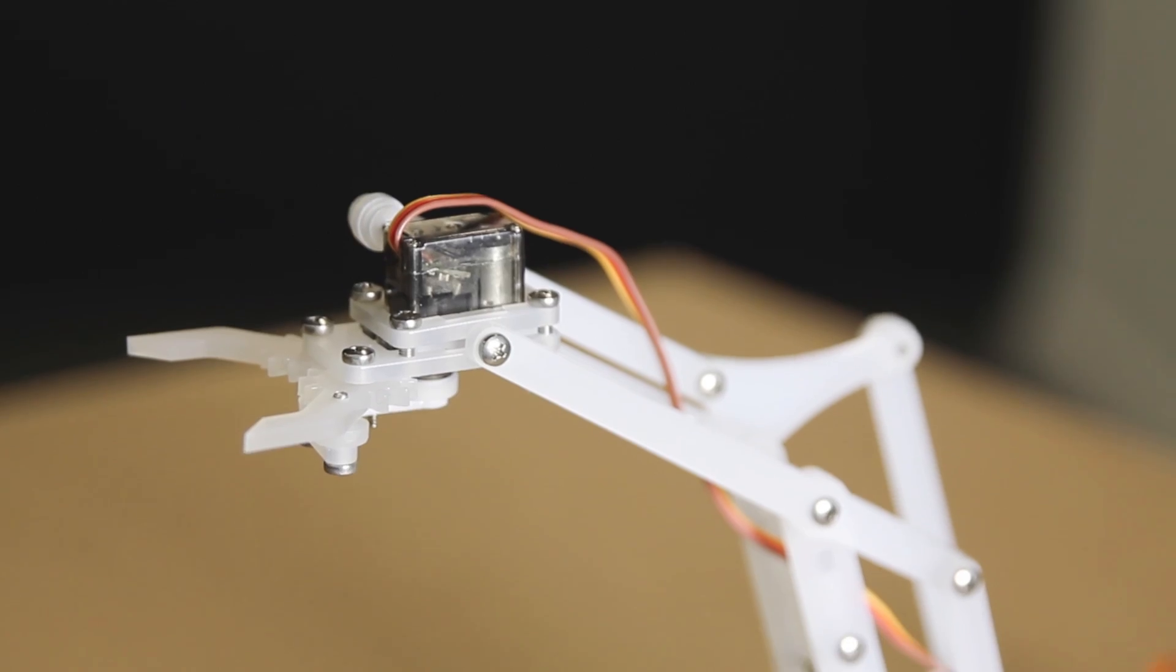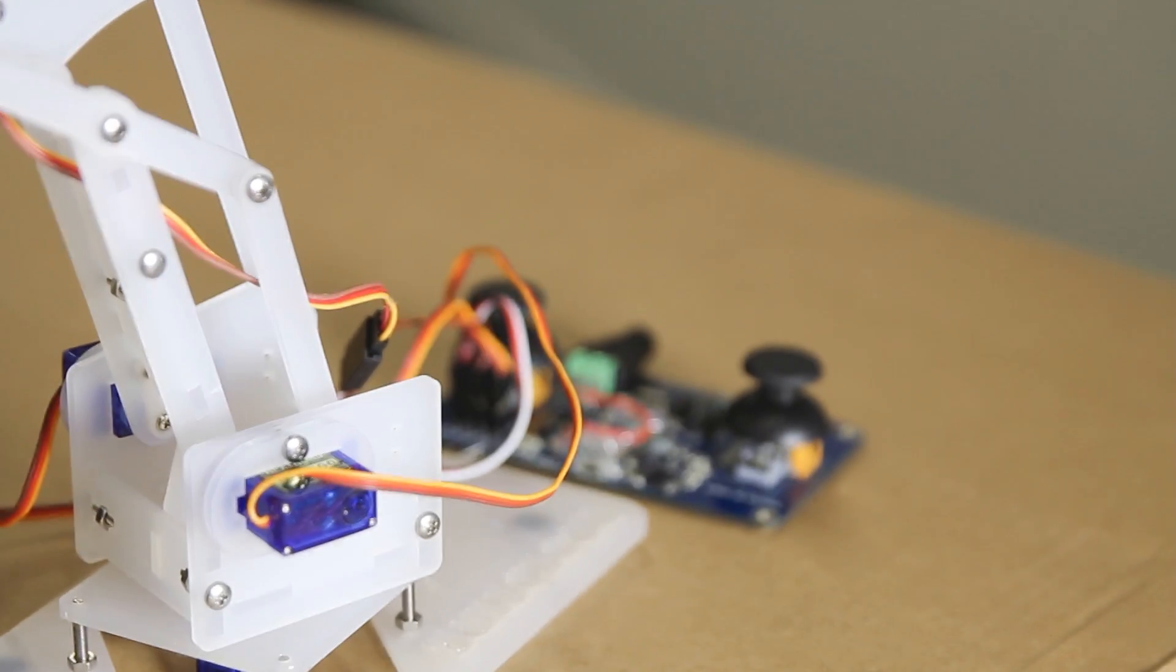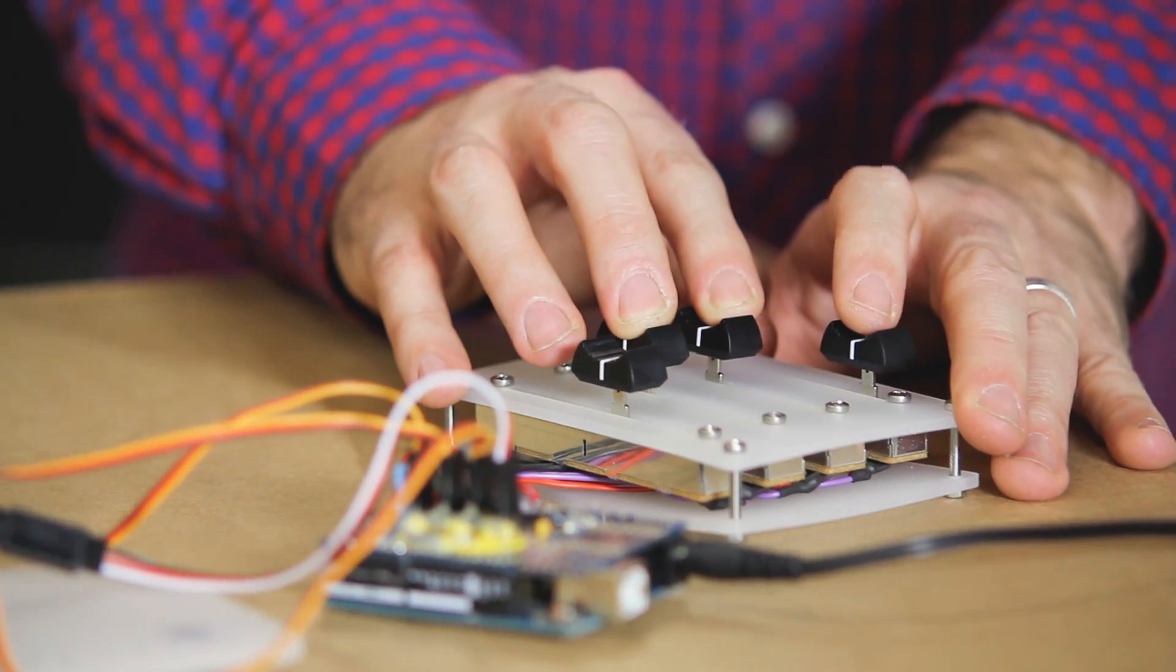MeArm is a pocket-sized robot arm kit. It was conceived to make electronics, robotics, and programming easily accessible by driving down the cost of robot arm ownership.